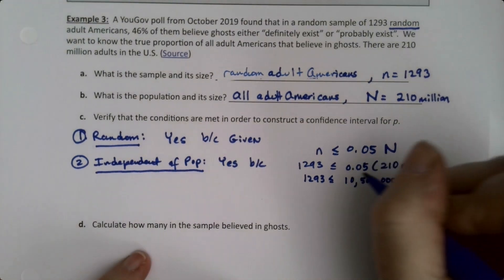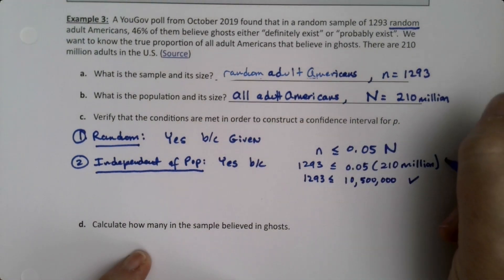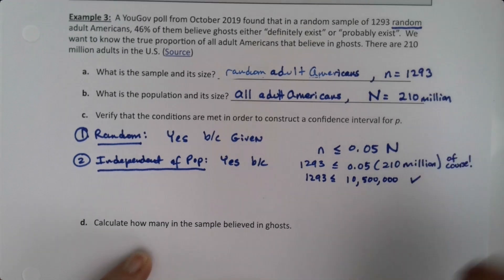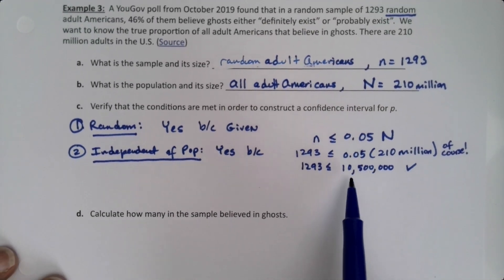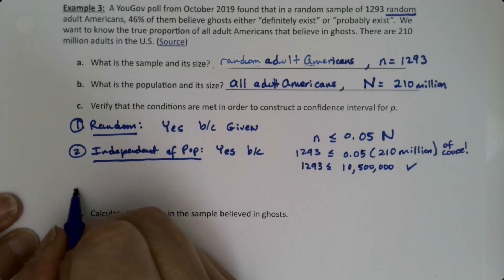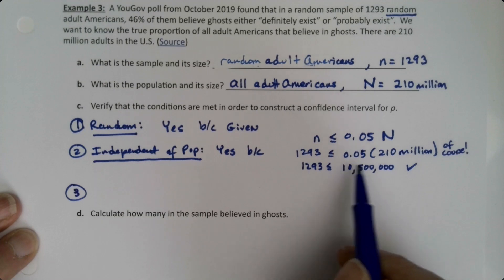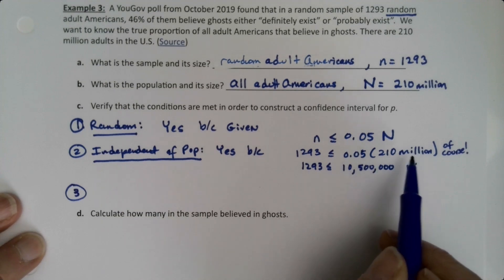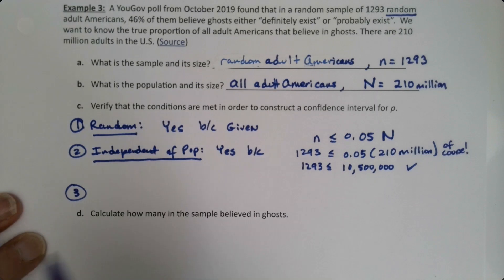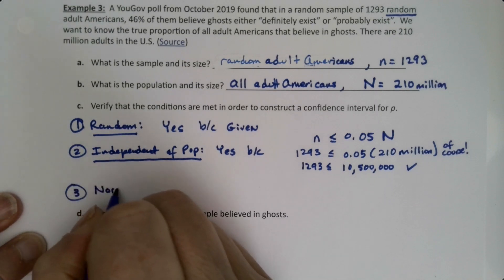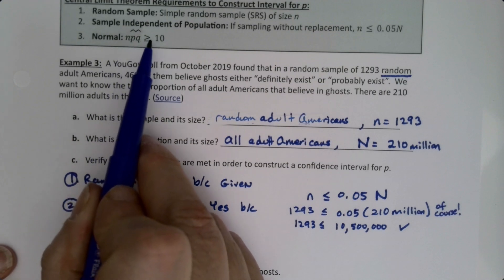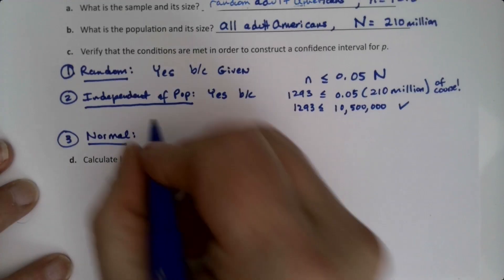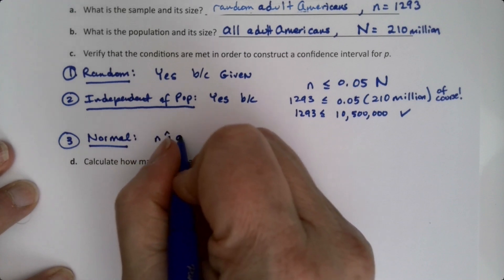If you want to stop at this line and say 'of course,' that's fine. It's so huge, of course it's less than that. But if you want the calculation, that's okay too—at least for my purposes. You only have to check this if it's really close. But with 210 million, this is clearly less, so we don't have to worry about it.